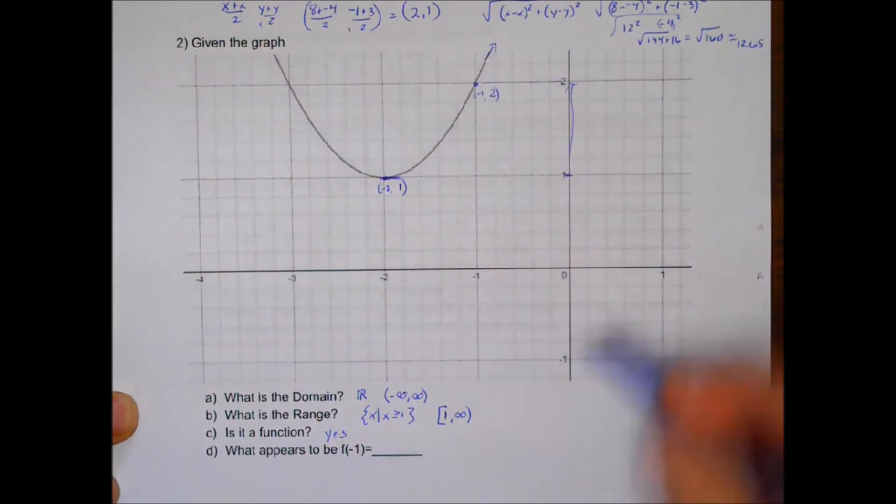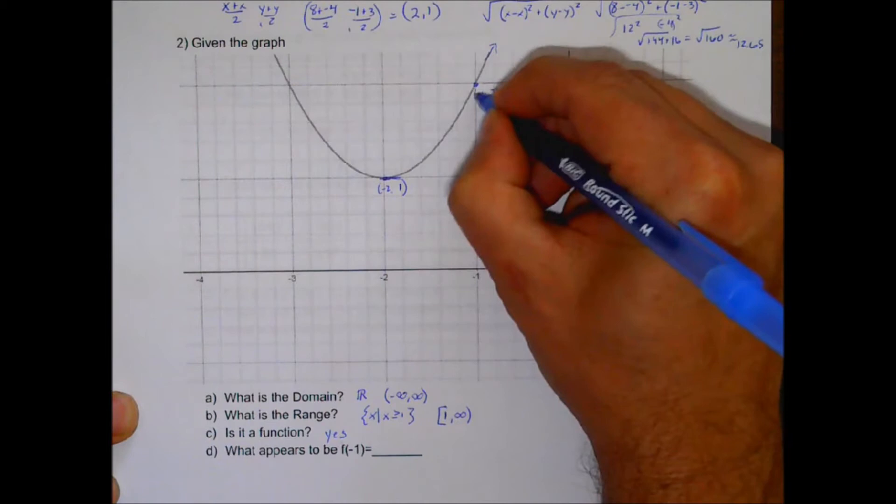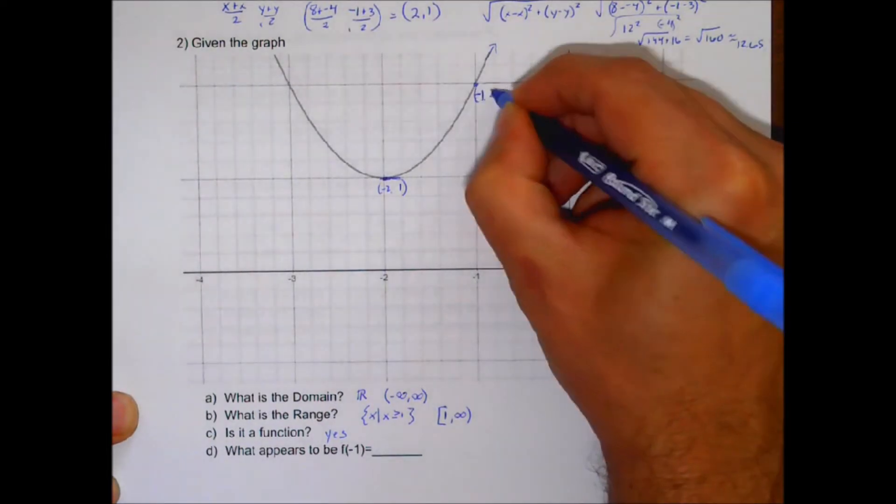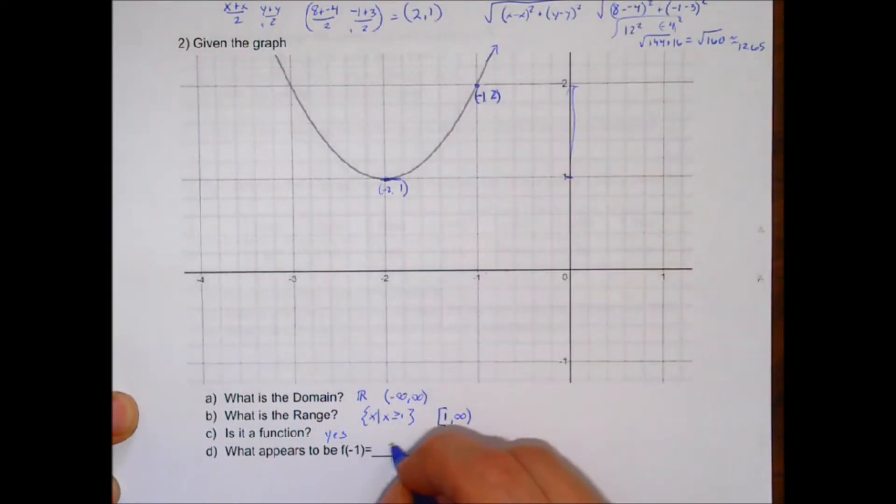And f of negative 1 right here at negative 1. If I have an input of negative 1, my output is a 2. So f of negative 1 is 2.